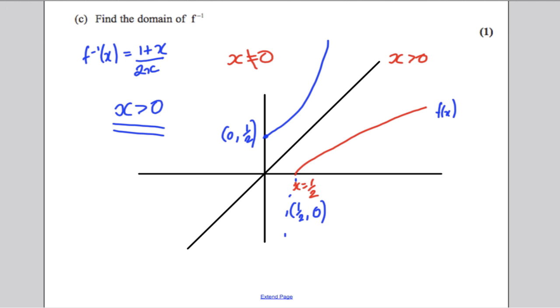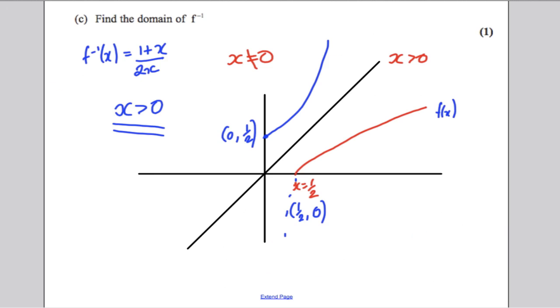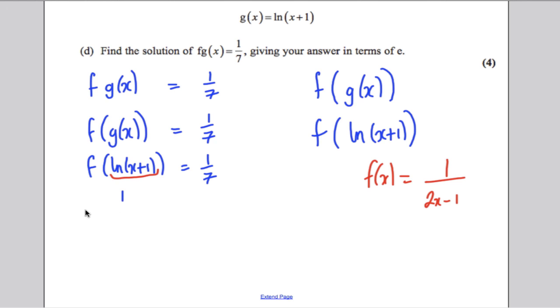Now, f(x) we had previously was equal to the following: 1 over (2x-1). So remember that f(x) over here was 1 over 2x, subtract 1. So we're going to substitute this in for x. So we're going to say, therefore, that 1 over 2 of ln(x+1), subtract 1, equals 1/7. Notice the 2 is just multiplying by the x, not by the 1.